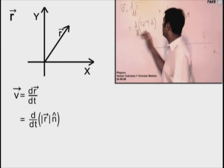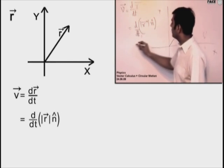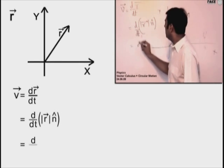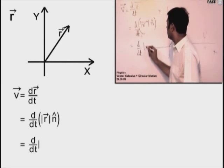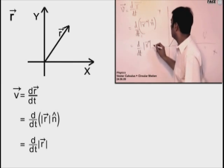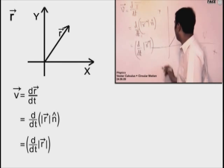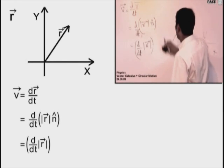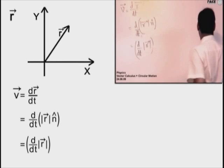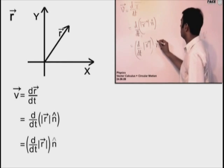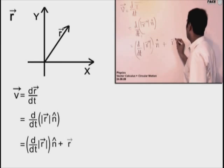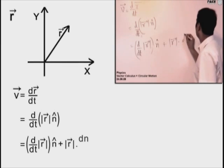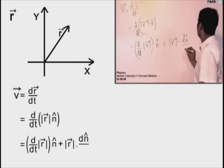Now if I differentiate r = |r|·n̂ and apply the product rule, I get d|r|/dt times n̂, plus |r| times dn̂/dt.